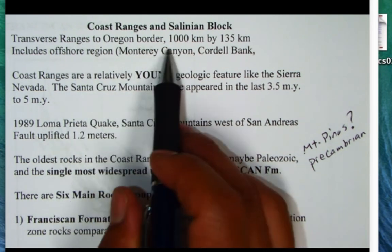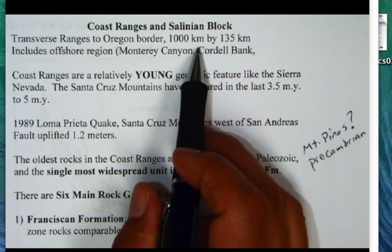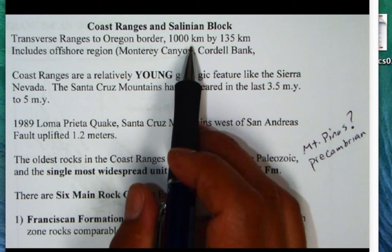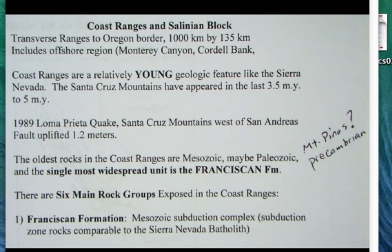The Coast Ranges are over a thousand kilometers long, about 135 kilometers wide. The eastern border of most of the range is the Central Valley or Great Valley province, but up in the northern part, it's the Klamath Mountains on the eastern side.